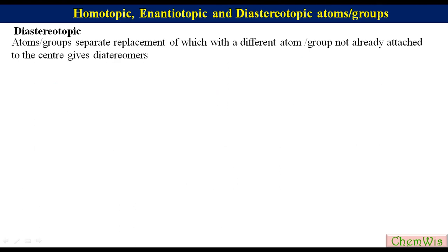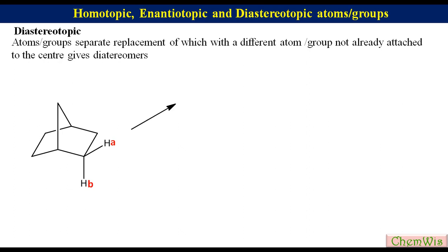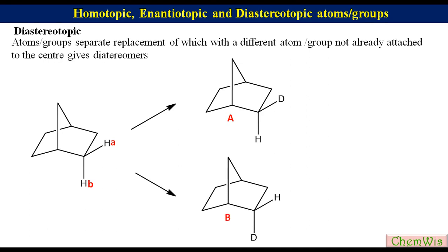Let's have the example of norbornane. We have to find the relation between indicated hydrogens A and B. Replacement of HA with deuterium gives structure A, while replacement of HB gives structure B. Structures A and B are diastereomers. So HA and HB are diastereotopic.